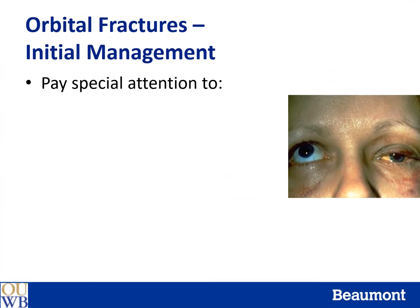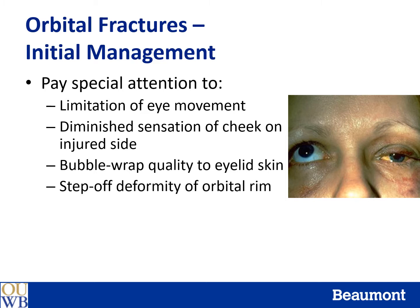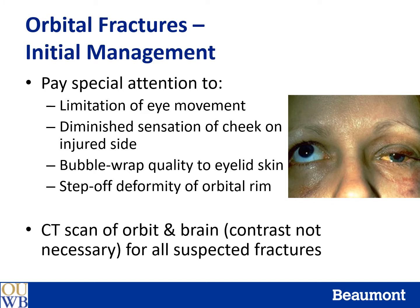On physical exam, pay special attention to any limitations in eye movement. Limitation of eye movement may indicate entrapment of the extraocular muscle. Check for diminished sensation of the cheek on the injured side, which may indicate injury to the infraorbital nerve in the setting of a floor fracture. Also assess for a bubble-wrap quality of the eyelid skin, which may indicate subcutaneous emphysema, or a step-off deformity of the orbital rim. A non-contrast CT scan of the orbit and brain should be obtained for all suspected fractures. If a head CT is ordered and an orbit fracture is noted, a follow-up orbit CT should be obtained.